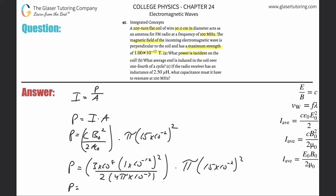So this is now: 3×10⁸ multiplied by (1×10⁻¹²)² divided by 2 times 4 times π times 10⁻⁷, then multiplied by π times (15×10⁻²)². This works out to be approximately 8.44×10⁻¹² watts. That takes care of part A.